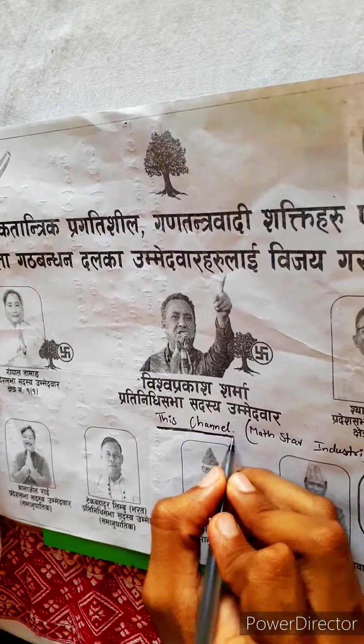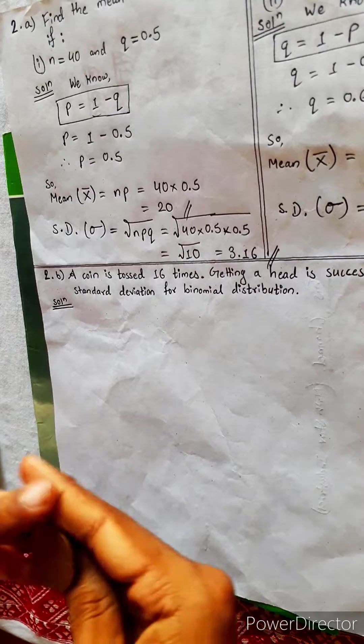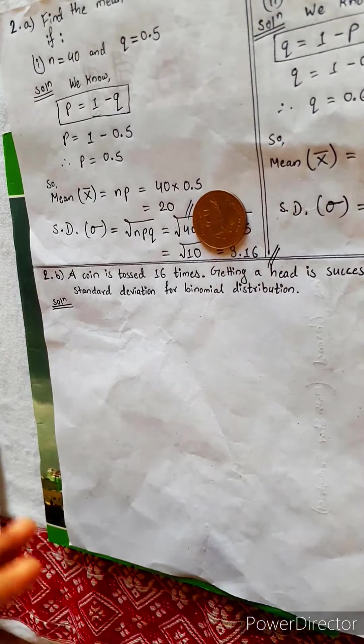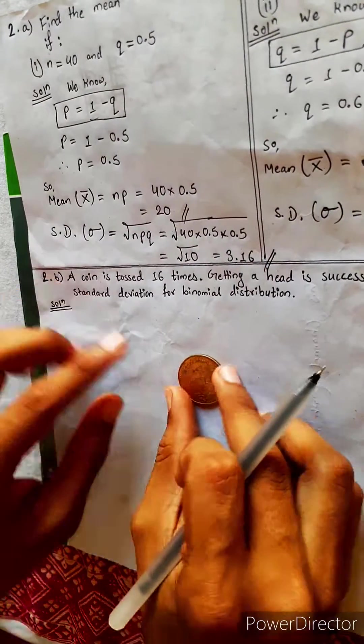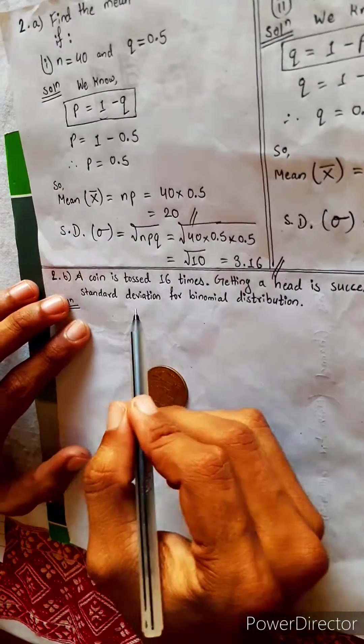Let's do question number 2b. A coin is tossed 16 times. Getting a head is a success. We need to find the mean and standard deviation for binomial distribution.